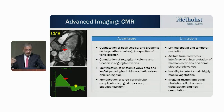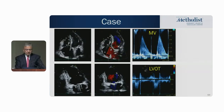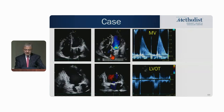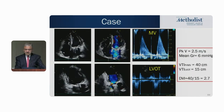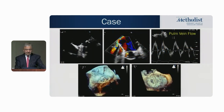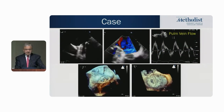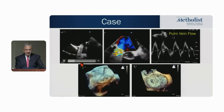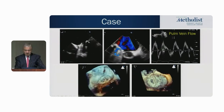CMR can also assess ventricular function and identify valve abnormalities in bioprosthetic valves — including large perivalvular regurgitation, dehiscence, or pseudoaneurysm. In this case example, you cannot see much on color Doppler, but the Doppler velocity index is very high at 2.7. Looking at the valve itself, it is rocking in a major way — severely dehisced — producing significant regurgitation.